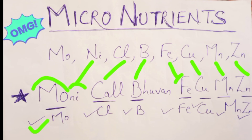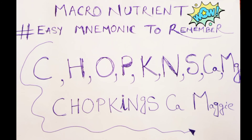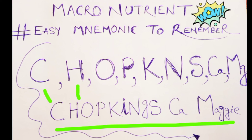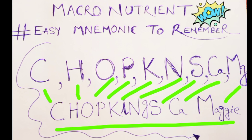Now comes the macronutrient part. To remember macronutrients, you have to remember: Chop King's Come Maggie. We all know that King's Maggie is very popular. From C — carbon; H — hydrogen; O — oxygen; P — phosphorus; K — potassium; N — nitrogen; S — sulfur; Ca — calcium; and Mg is Maggie, so magnesium. This is very simple — you will be able to remember micro and macronutrients and never get confused when a question comes from this topic.